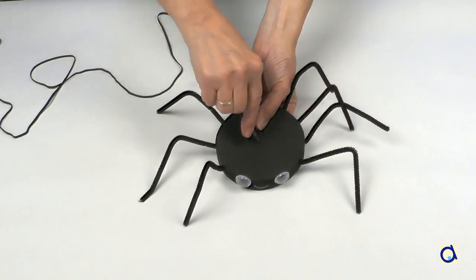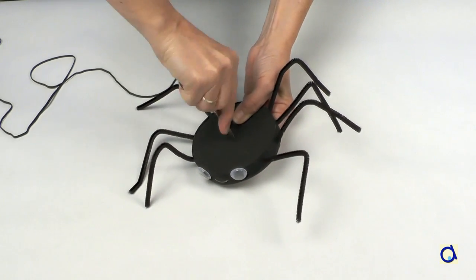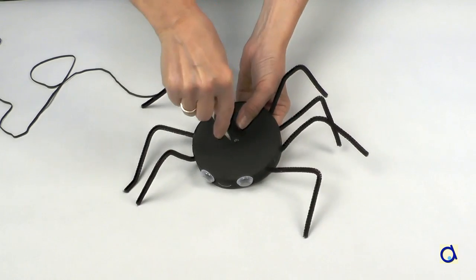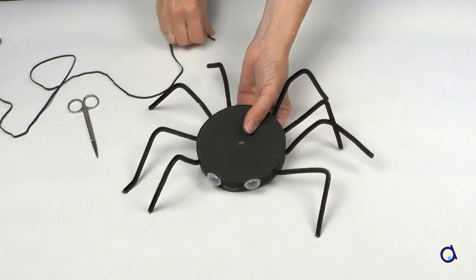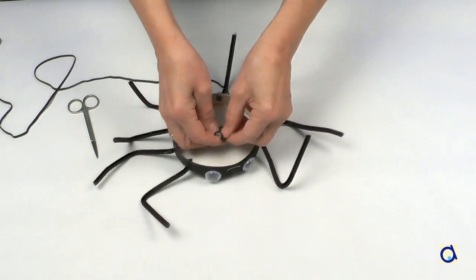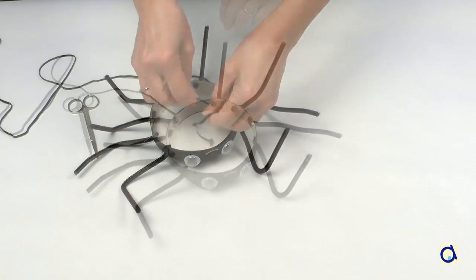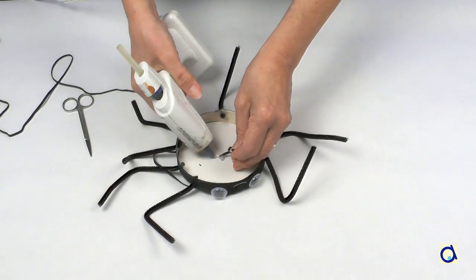You can use the spider as is or add a string or an elastic cord. Make a hole in the middle of the flat top of the box with a pair of sharp scissors. Insert the end of a string or an elastic in the hole and make a double or triple knot and put a dot of hot glue to hold the end in place.